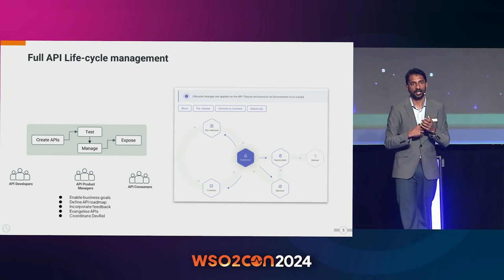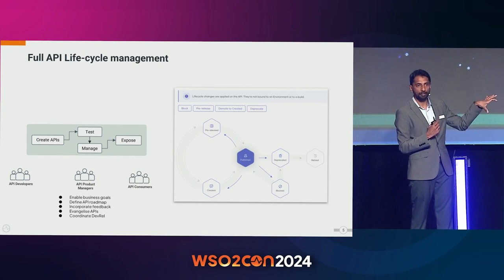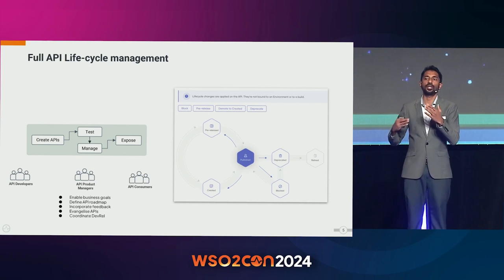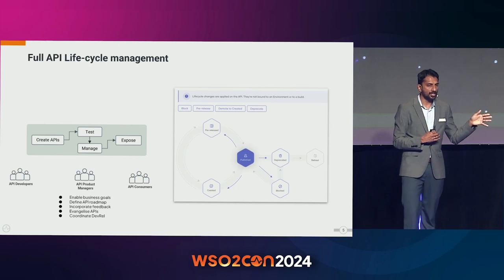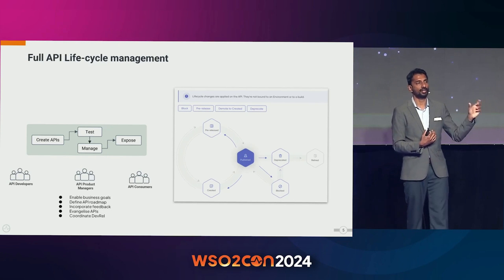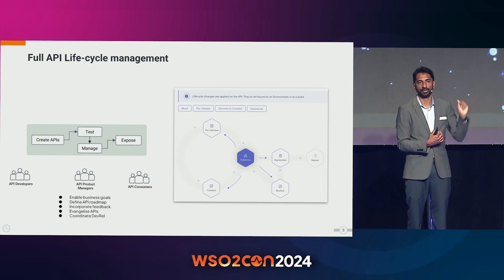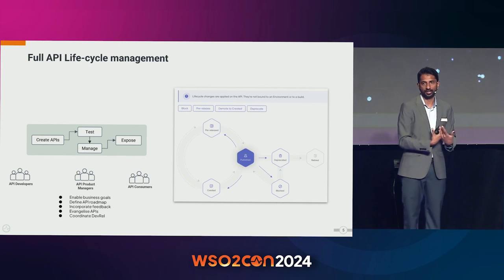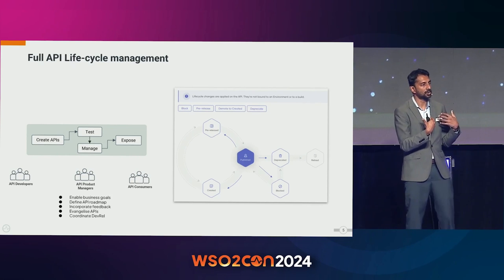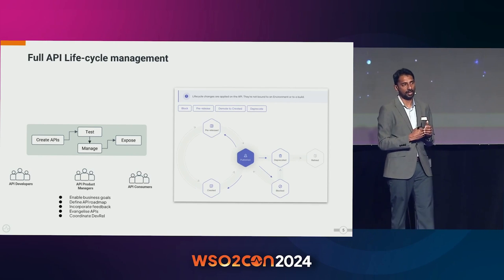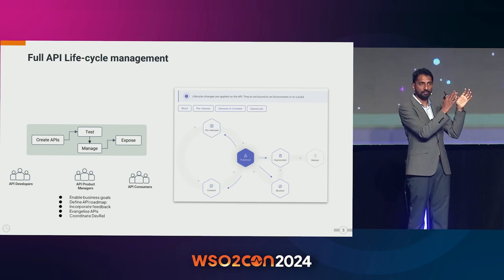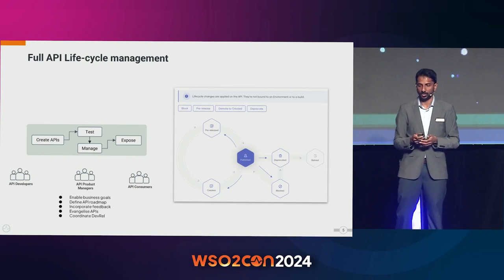One critical category we're seeing in many larger organizations today is the API product manager concept. This person's role is to define the roadmap for APIs, define what the APIs themselves look like, and do the evangelism around the platform. There was a recent Gartner study on why API strategies are failing in some organizations, and more than 50% of the reason was this lack of an API product manager. In mature organizations, API management is a business metric with a dedicated business function.